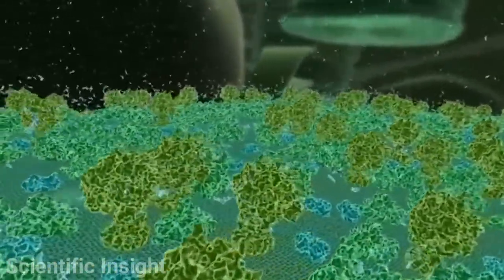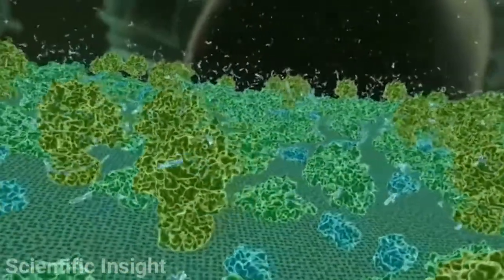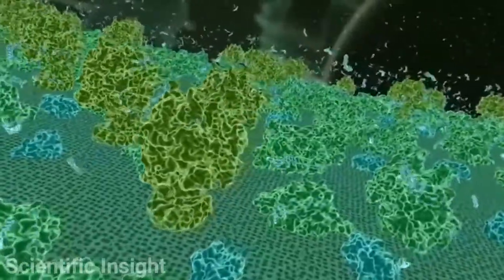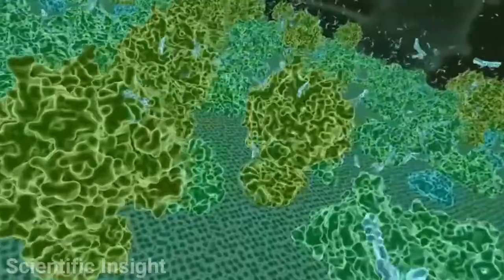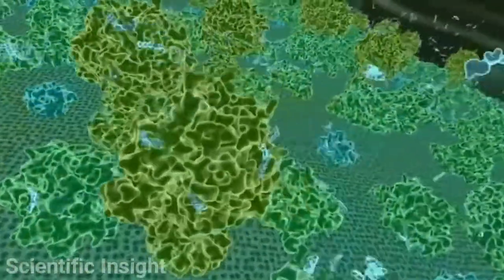The green and blue bush-like structures are photosystems, clusters of proteins that absorb light energy from the sun and help convert it into the chemical energy that's stored in the bonds of the energy carrier molecule called ATP.